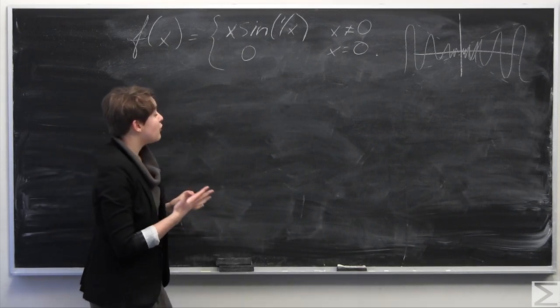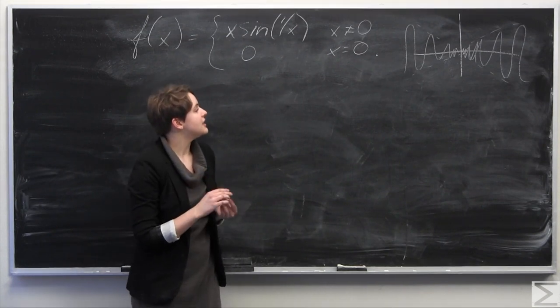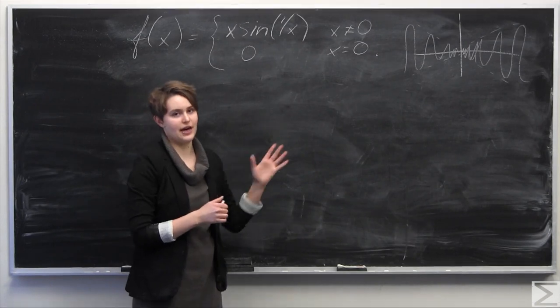So for a function to be continuous at a point, it means that the limit as x approaches that point must be equal to the function evaluated at that point.